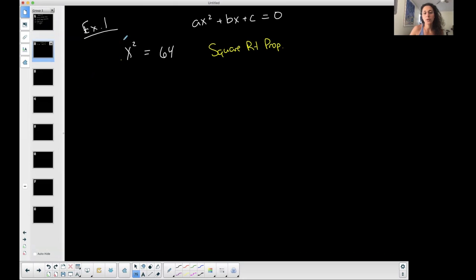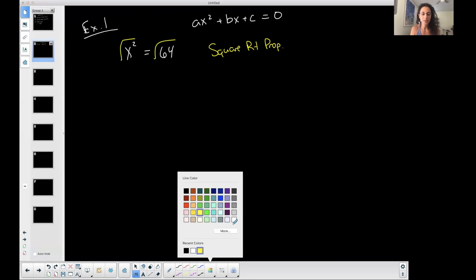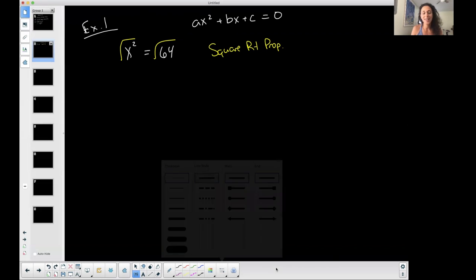Square root property says square root both sides. And then the square root of x squared is x. You did radical expressions recently. The square root of 64 is 8, but remember that you have to have the same number of solutions as you do your degree. There should be two solutions here.